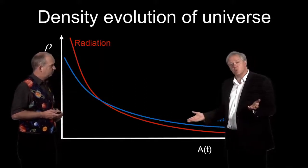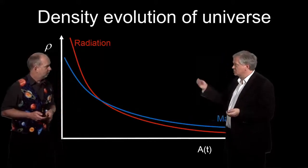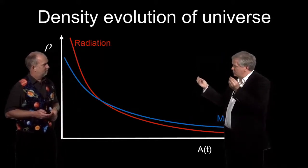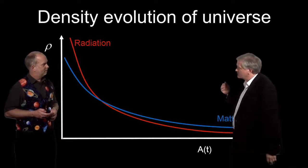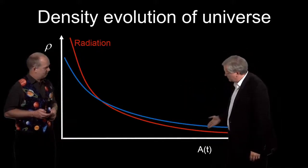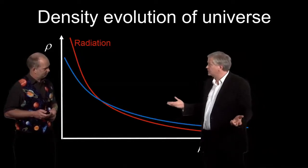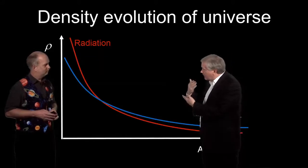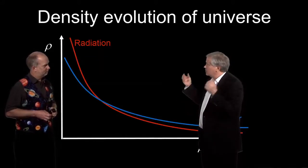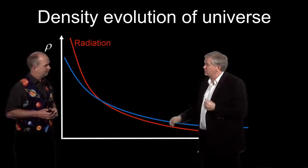If you go back and it's 5,000 to one right now, and since one's going down as A⁴, the other one is A³, you take the ratio, the ratio goes as 1 over A. Which means that when the universe was 5,000 times smaller than it is now, then matter and radiation were about the same, and before that time, radiation was the most important thing in the universe.